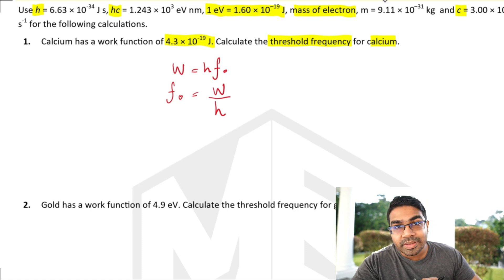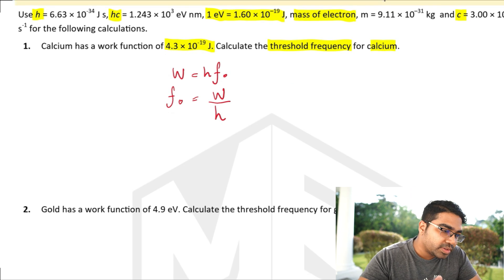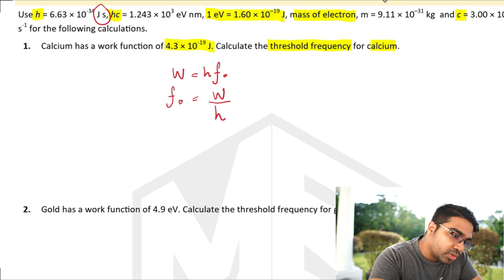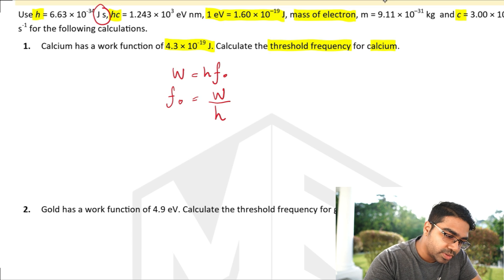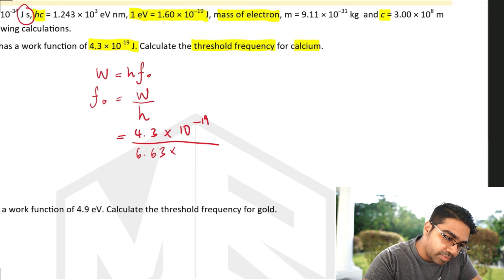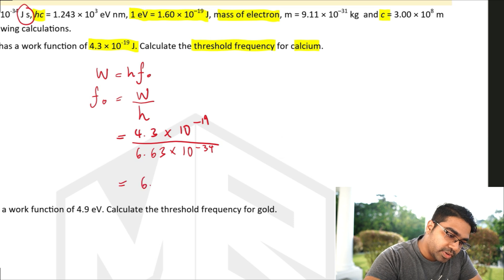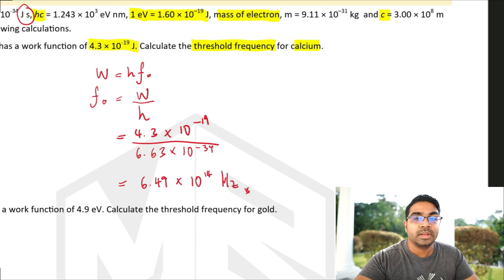It is important to note that W must be in joules, because Planck's constant has units of joule-seconds — so when we substitute the work function it must be in joules, not electron volts. This gives us 4.3 times 10 to the power of negative 19 divided by 6.63 times 10 to the power of negative 34, and the answer is 6.49 times 10 to the power of 14 hertz.